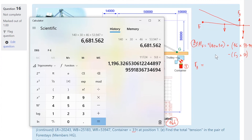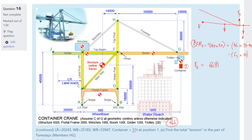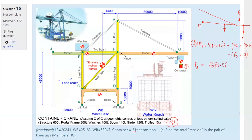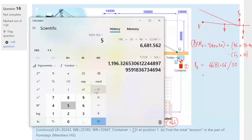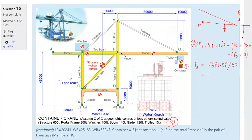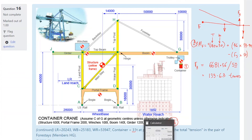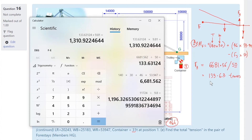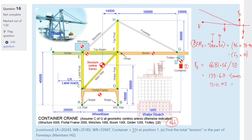That gives Fy = 6,689.56 divided by 50 = 133.63 tons. Converting tons to kilonewtons gives approximately the vertical component of the cable force in kilonewtons.